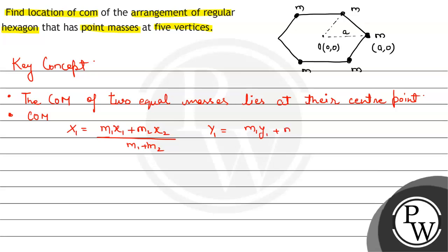Similarly, ȳ = (m₁y₁ + m₂y₂)/(m₁ + m₂), where x and y are the coordinates of each of the point masses. Here we are talking about two point masses.